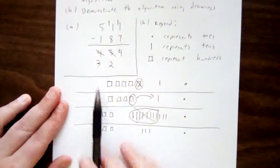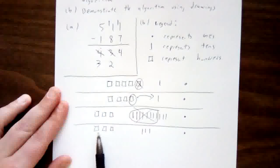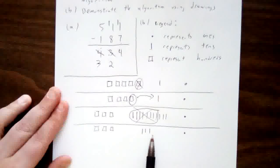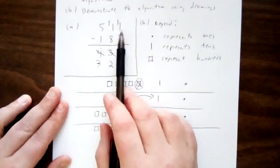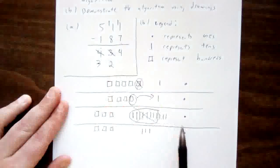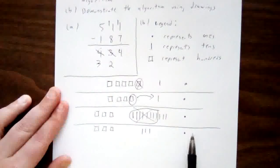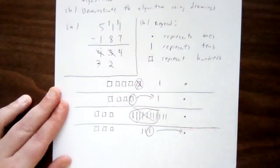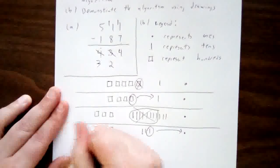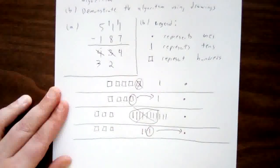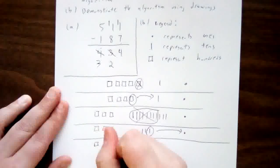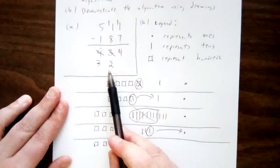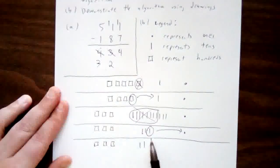We were at this part of the algorithm where we've borrowed from the four hundreds, leaving three hundreds behind, and did our subtraction in the tens place leaving three tens behind. Now we were moving to the ones place with the one one, and we wanted to remove seven of them. We had one dot and we'd like to remove seven — that's not possible. So we'll need to borrow from the three tens that we had left over. I'm going to take one of them away and move it into the ones place.